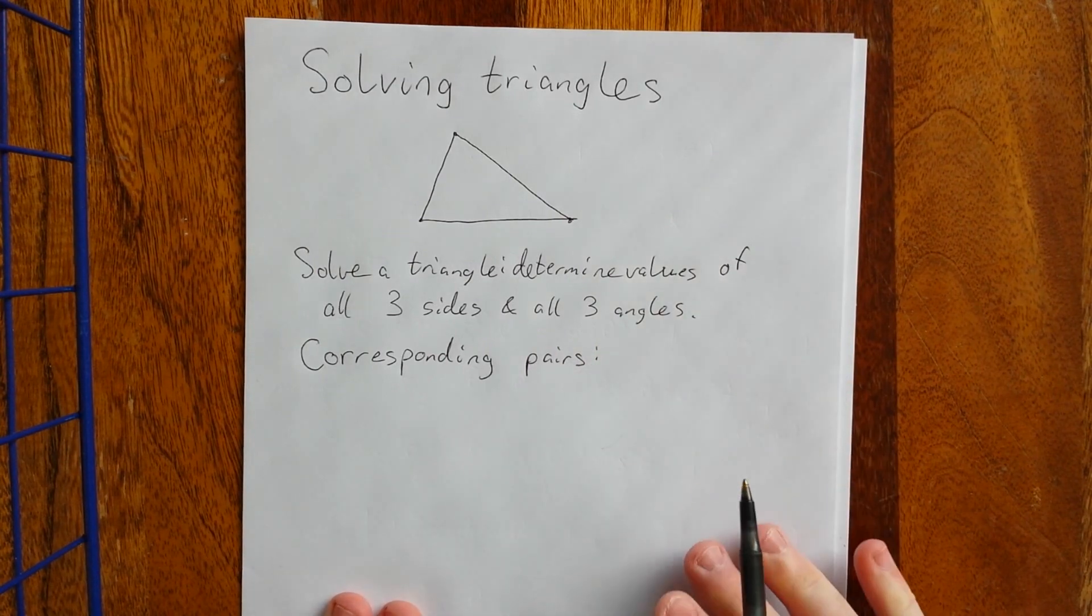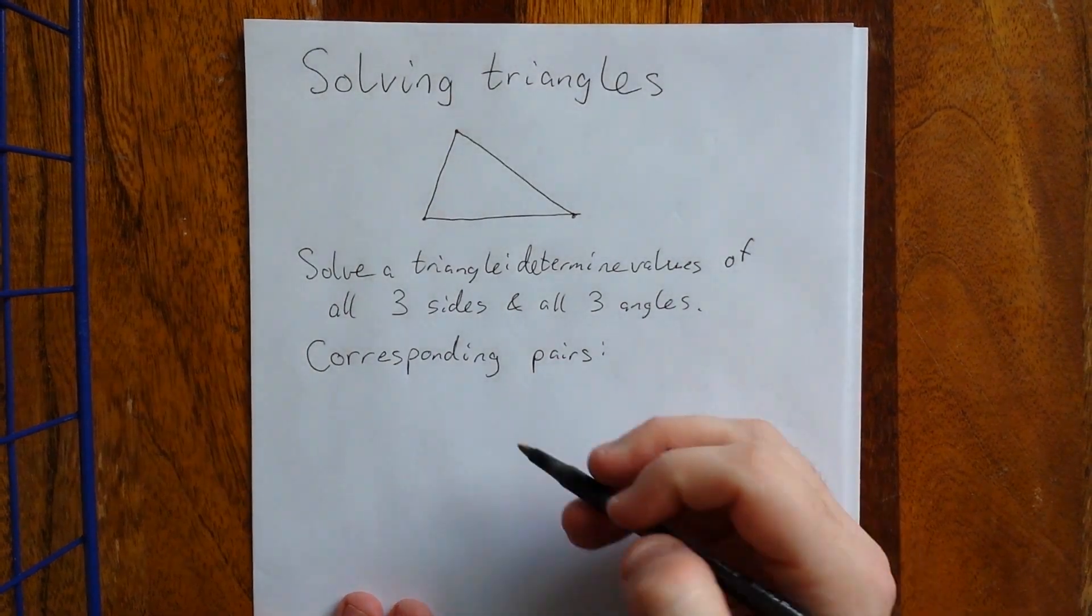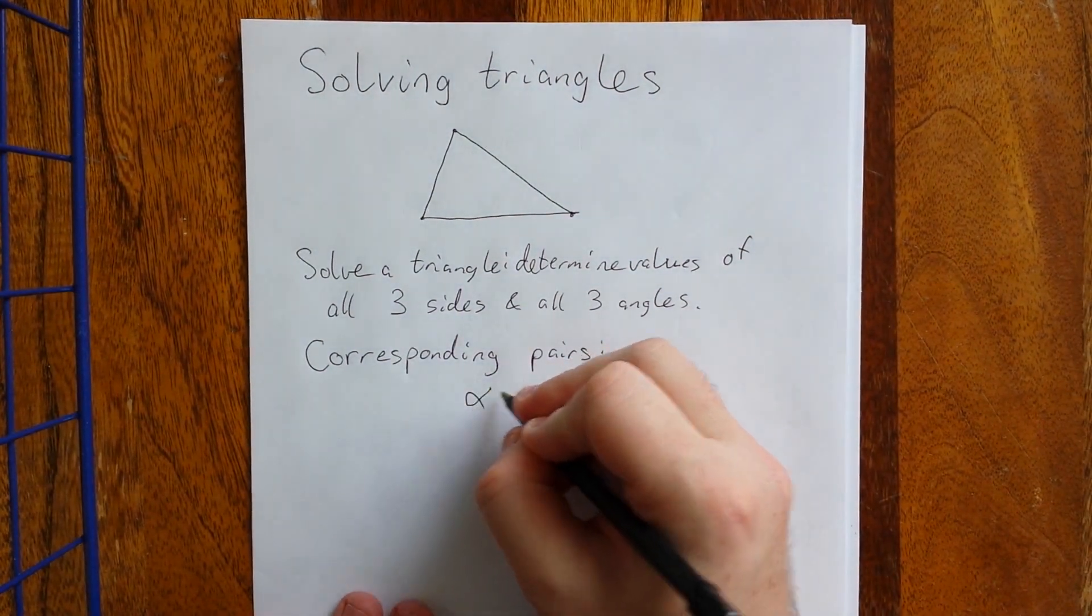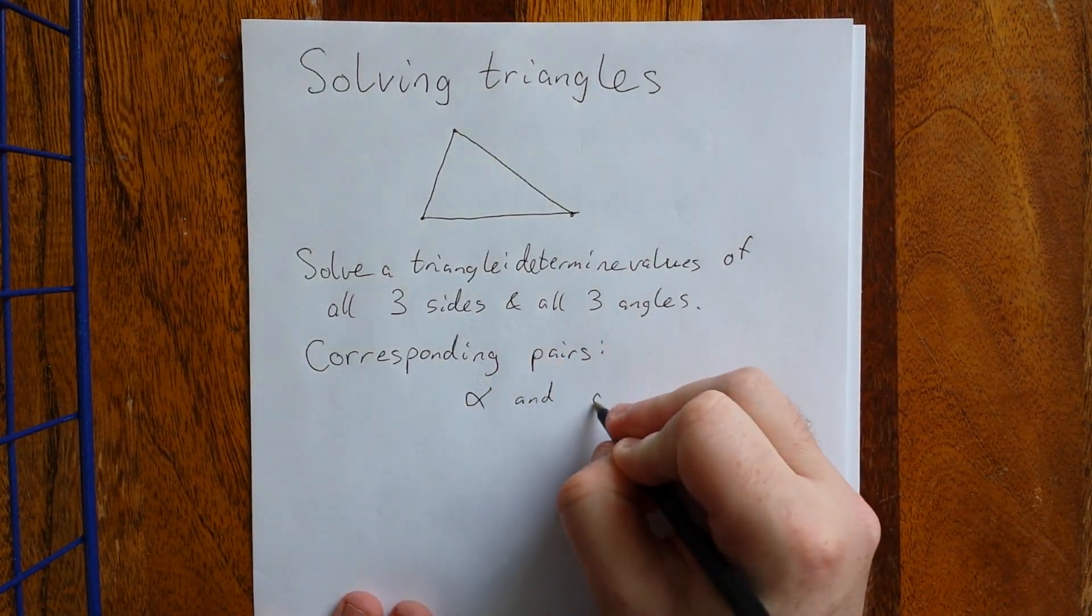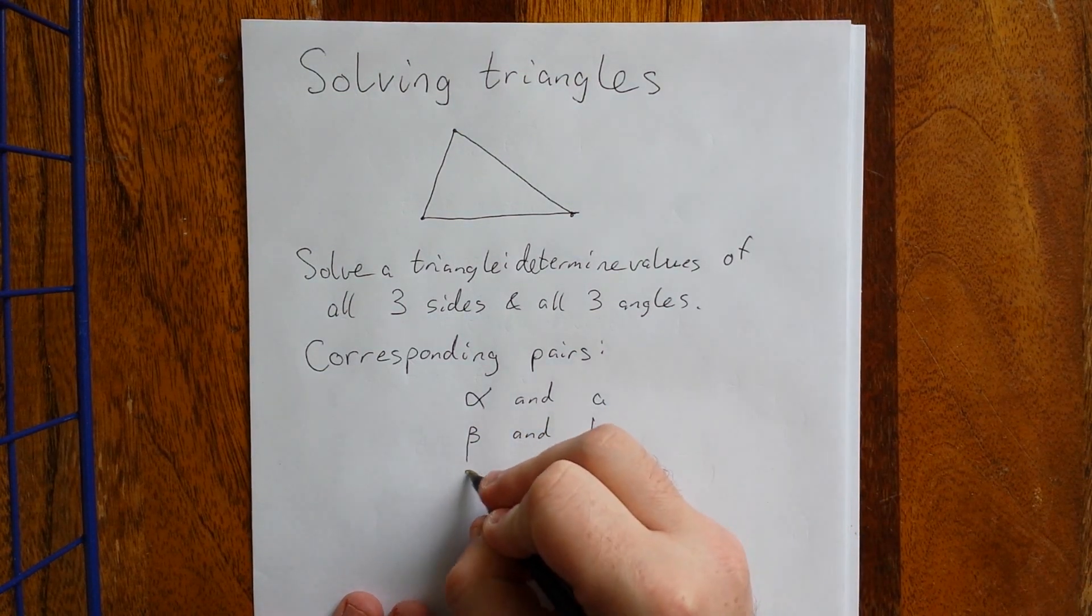These are also referred to as side-angle corresponding pairs or angle-side corresponding pairs. They are alpha and A, beta and B, and gamma and C.